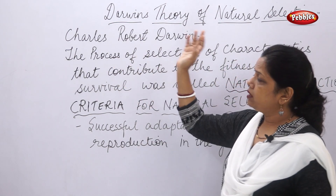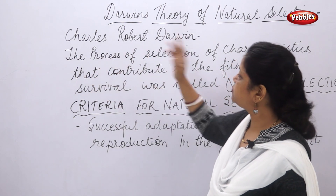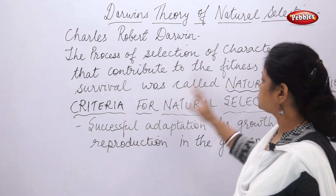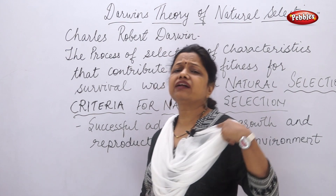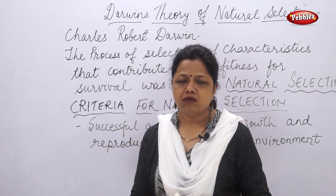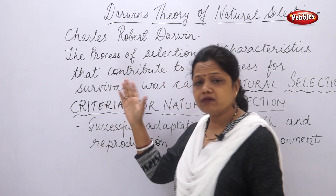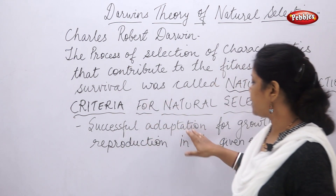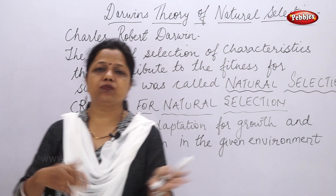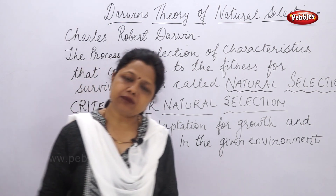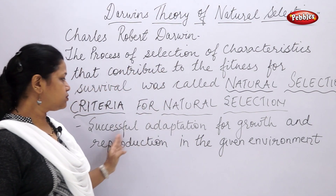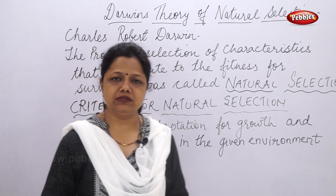If you are asked 'what is natural selection as said by Darwin,' you can say: Charles Robert Darwin defined it as the process of selection of characteristics that contribute to fitness for survival. The criteria given by Charles Darwin was successful adaptation for growth and reproduction. Two things are very important for ancestors to pass on their characteristics — growth must take place, and then reproduction should take place.